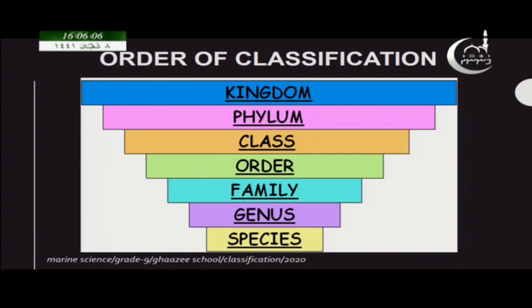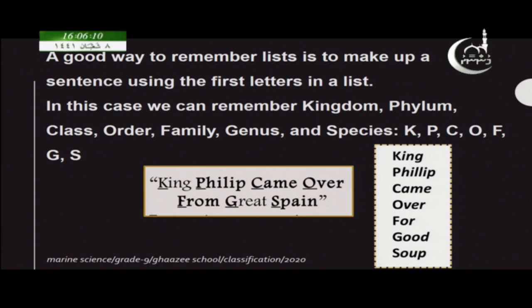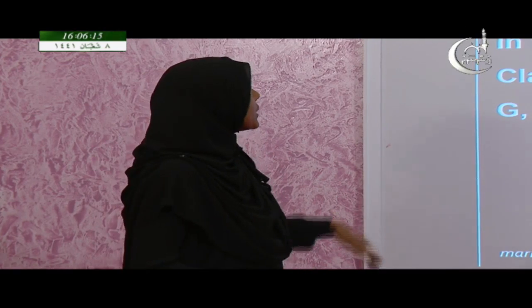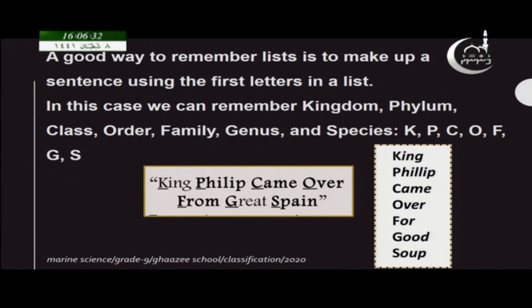You need to learn this order. There are certain ways to remember it. One way is to use the first letters of each level: Kingdom, Phylum, Class, Order, Family, Genus, Species — K, P, C, O, F, G, S.